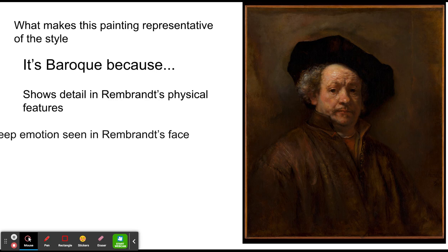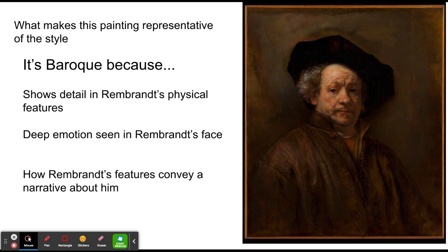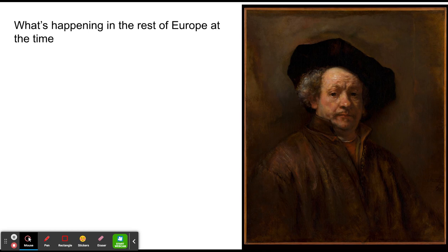This painting is Baroque because it shows great detail in Rembrandt's facial features — his eyes, the bags under his eyes — and the lighting on his face shows his apparent weight gain in his aging. We can see the emotion in his face, the sort of sullen look in his eyes as he stares at us. We also see how his facial features convey a narrative about him, as he appears to have declined in life and become much less of what the ideal artist may have looked like.